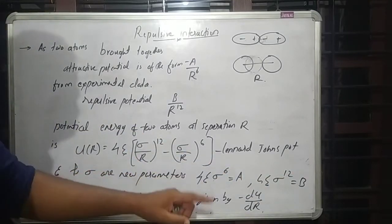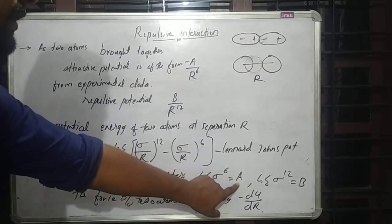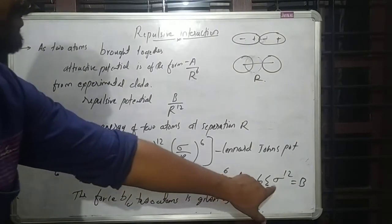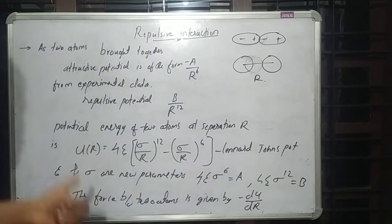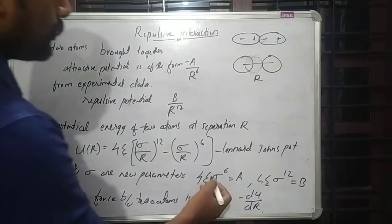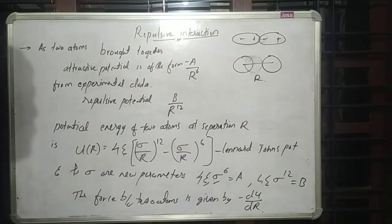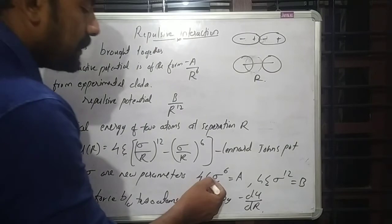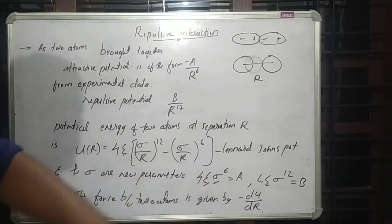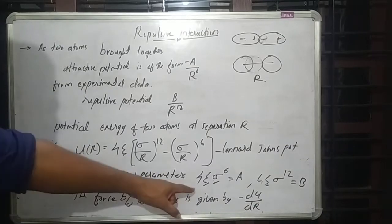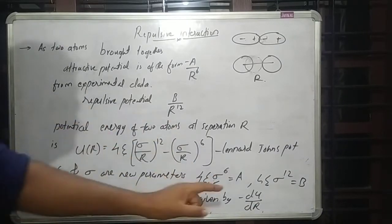Epsilon and sigma are new parameters, where 4 epsilon sigma raised to 6 gives the value for A, and 4 epsilon sigma raised to 12 gives the value for B. These parameters are different for different atoms, and from experimental observation we can find the values of epsilon and sigma.